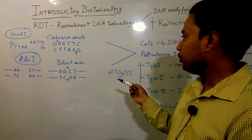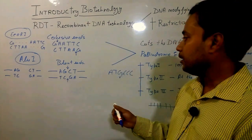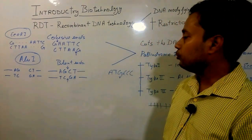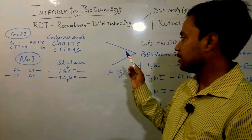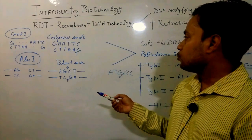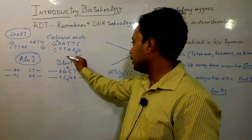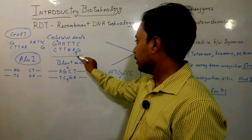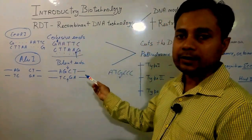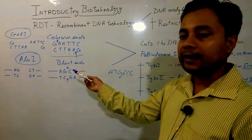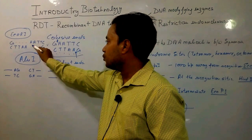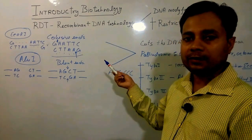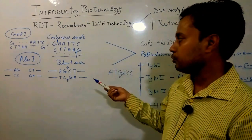Restriction endonucleases recognize palindromic sites — mirror sequences — such as GAATTC in the case of EcoRI. The first class produces cohesive or staggered ends after digestion. The recognition site is a hexamer of 6 bases, and the enzyme cuts at staggered positions on the two strands, producing overhangs available for further ligation. These enzymes are most preferable for oriented cloning of gene molecules.